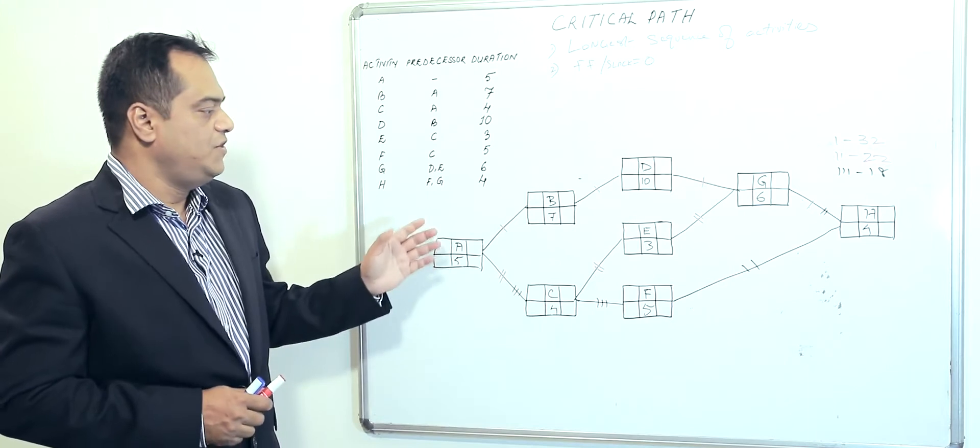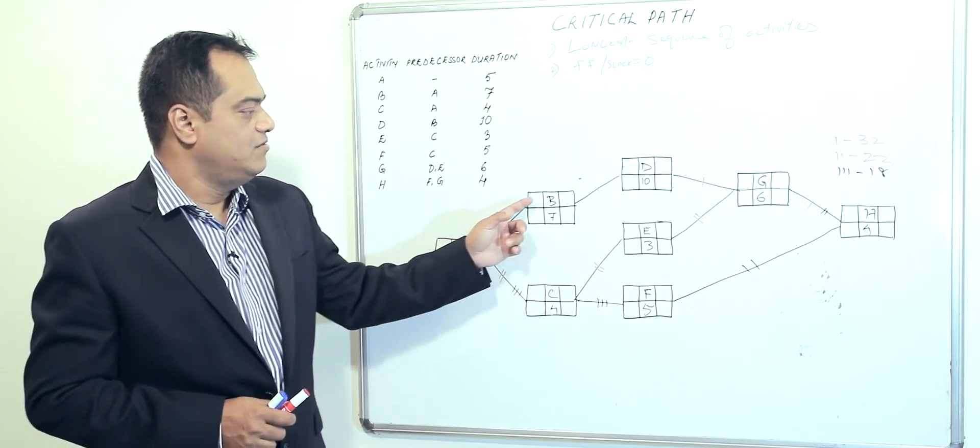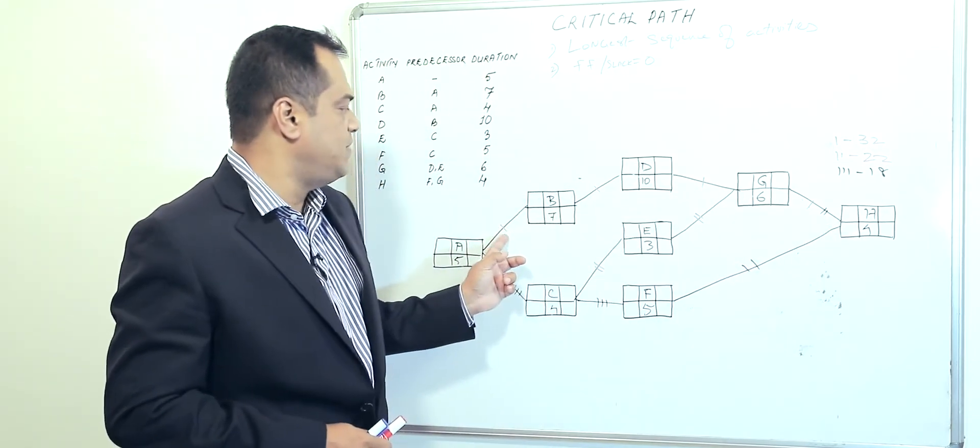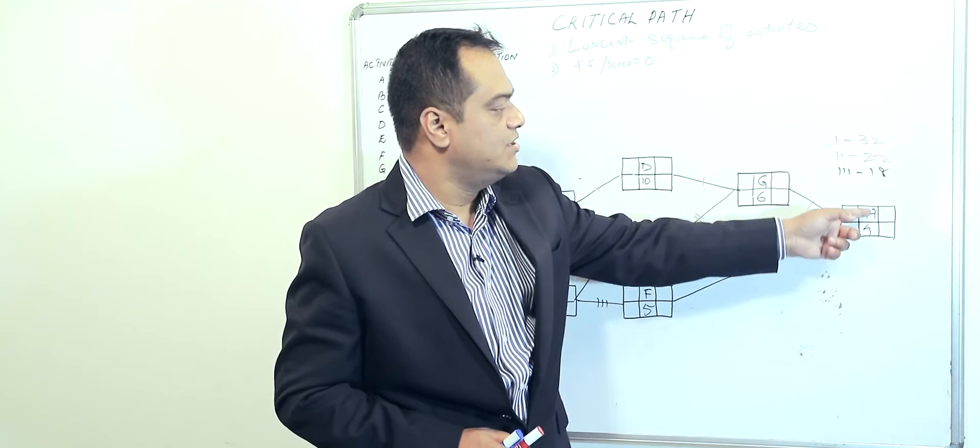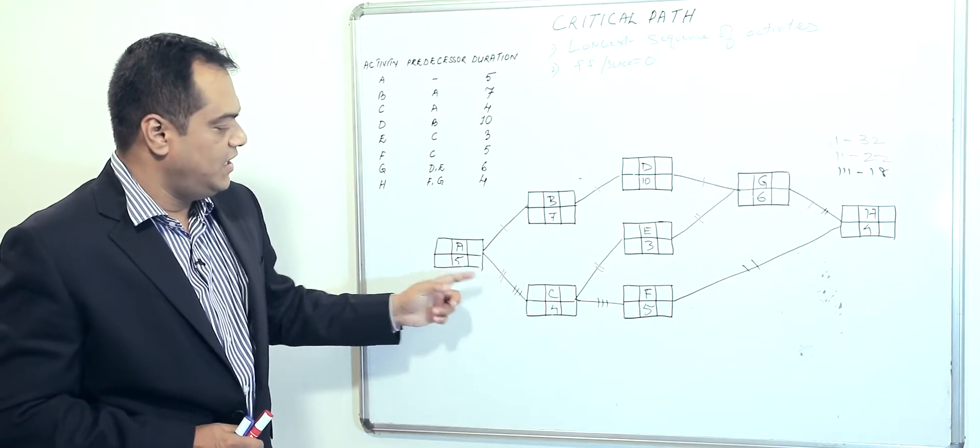If we try to see this first part, which is A, B, D, G, and H, the first part is taking 32 days time.